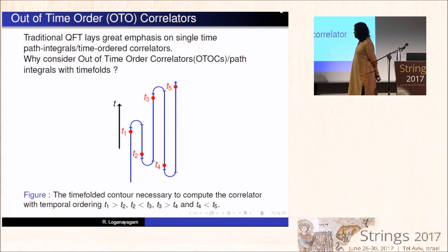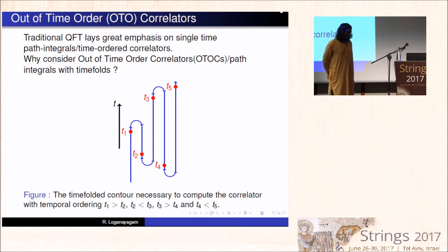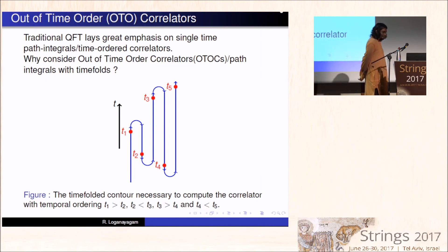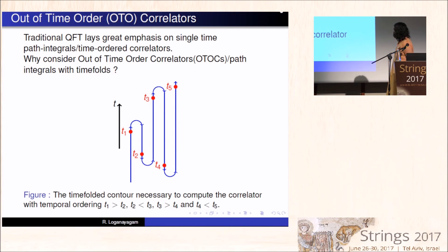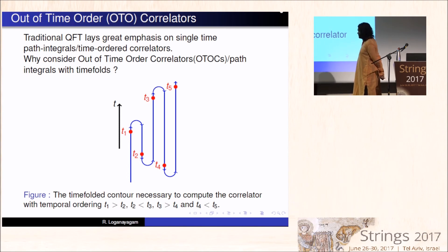Here you have a time going from below to above, and what you are interested in is a correlator of various operators, denoted here by red dots, which are inserted at various times. Some operators are inserted after other operators and so on. In some sense, this particular contour tells you which operator occurs before which operator.